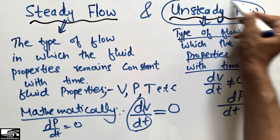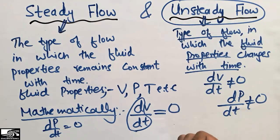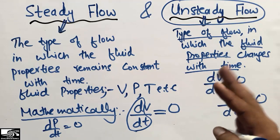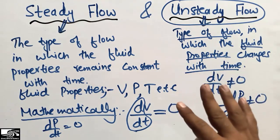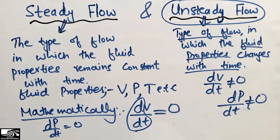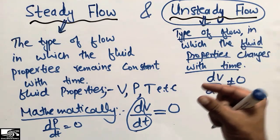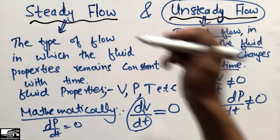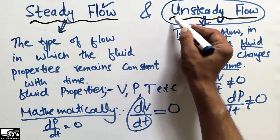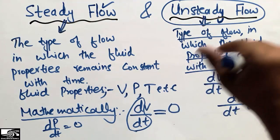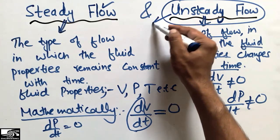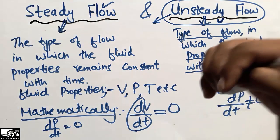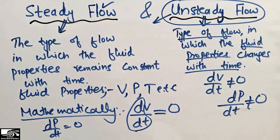An example of unsteady flow is when we open a tap: at the start, the properties of the fluid are changing with time. But as time goes on, the flow becomes steady and the fluid properties become constant. So at the start of opening the tap we see unsteady flow, while with the passage of time the flow follows a steady flow path.